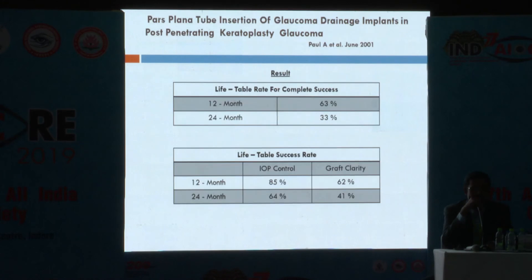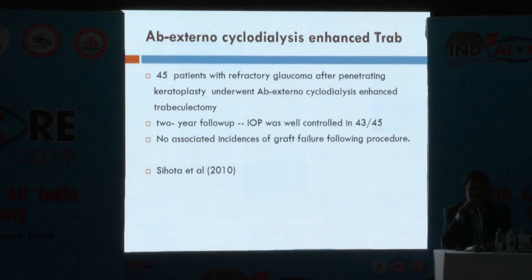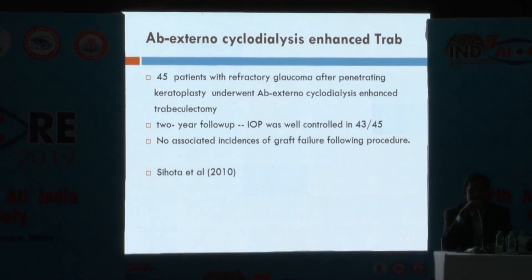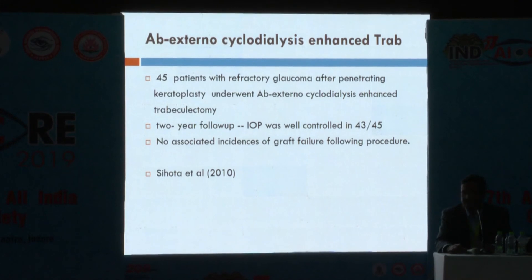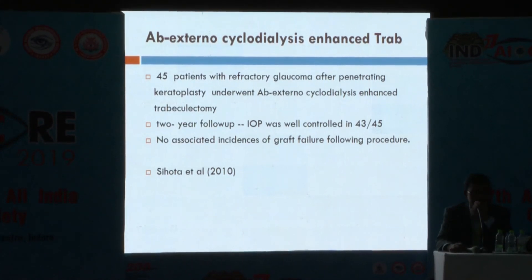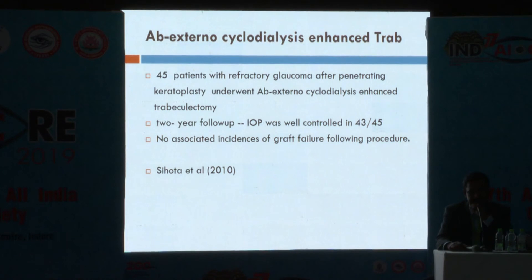The pars plana tube insertion of glaucoma drainage implants in post-PK glaucoma was studied by Paul et al., with reasonably good results for IOP control and graft clarity. Ab externo cyclodialysis-enhanced trabeculectomy was studied by Cihota et al. in 2010, where 45 patients had good IOP control and no incidence of graft failure following surgery.